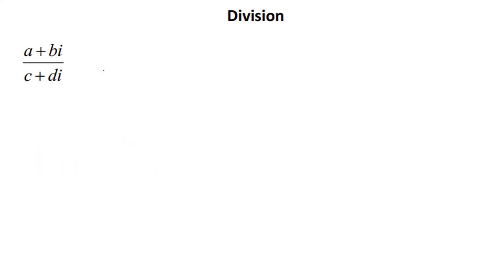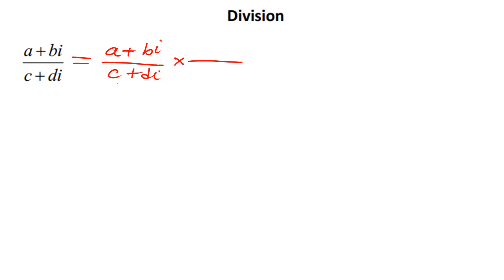Division of complex numbers requires you to utilize the concept of the conjugate. So the numerator is a + bi and the denominator is c + di. We're going to multiply this expression by what I call a special one. We look at the denominator, which is c + di, and multiply both the numerator and the denominator by the conjugate of the denominator. Since the denominator is c + di, the conjugate is simply c − di.